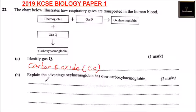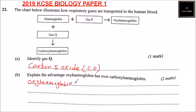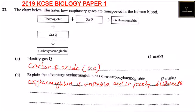Explain the advantage oxyhemoglobin has over carboxyhemoglobin. Oxyhemoglobin is unstable. It is unstable and it freely dissociates and releases oxygen to the body tissues.